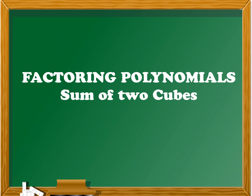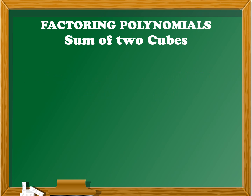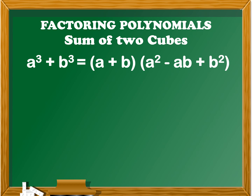We have the sum of two cubes. In factoring polynomials wherein we have the sum of two cubes, we have the formula: a cubed plus b cubed is equal to the quantity of a plus b, times the quantity of a squared minus ab plus b squared.